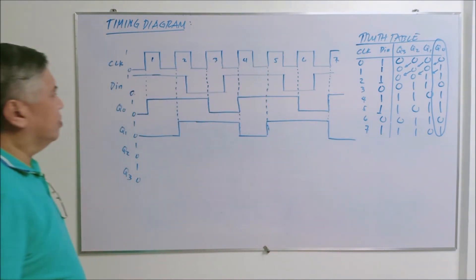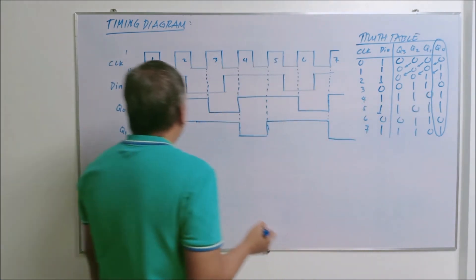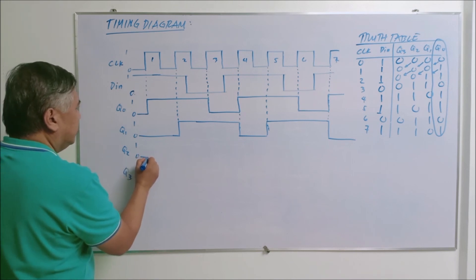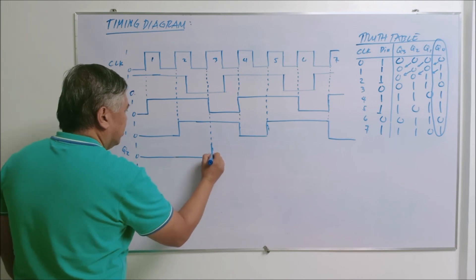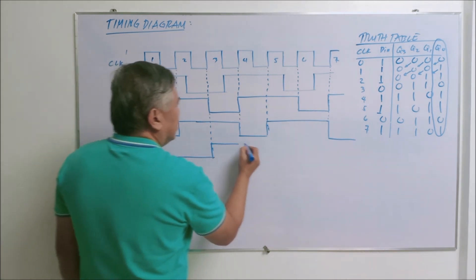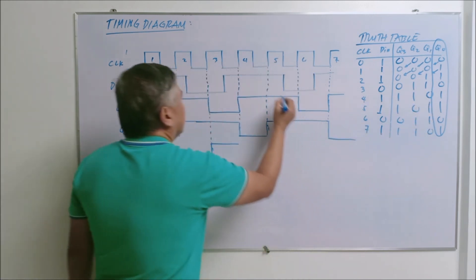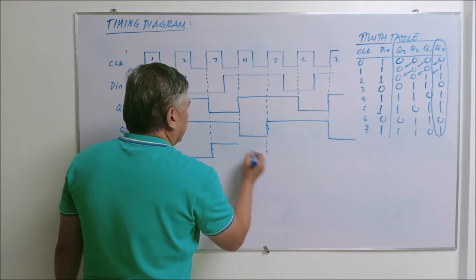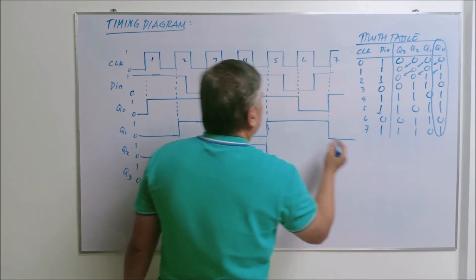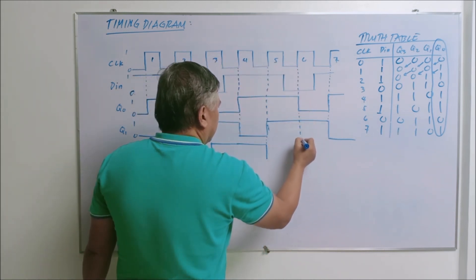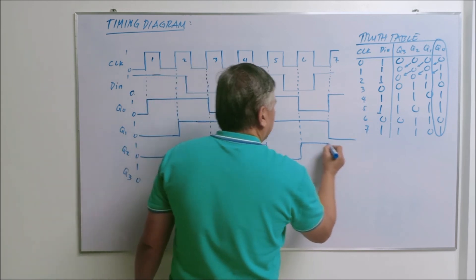Q sub two becomes one on the third positive triggering of the clock. So it starts with zero and becomes one on the third positive triggering. Then it becomes zero on the fifth positive triggering. It becomes one again on the sixth and remains one through the seventh.